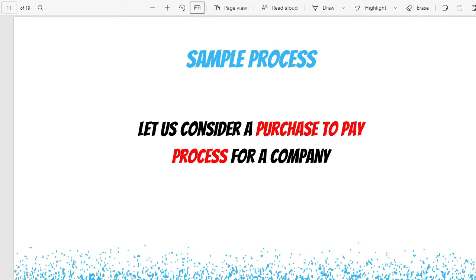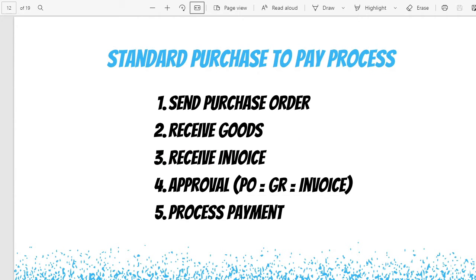For simplicity, let us consider a purchase-to-pay process. A purchase-to-pay process is as simple as: an organization that wants to buy something sends a purchase order to a vendor. The vendor sends the goods and the invoice, and receives payment from the buying organization. In order: the organization first sends a purchase order, then receives the goods and an invoice from the vendor. Checks called approvals happen to verify whether the quantity and price on the purchase order match the goods received and the vendor invoice. If price and quantity match across all three documents, a payment can be processed.